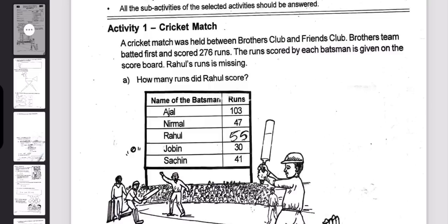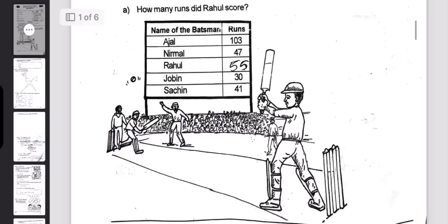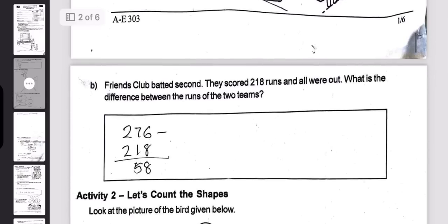The total is 276. Friends Club batted second and scored 216. The total difference between the runs of the two teams is 255.